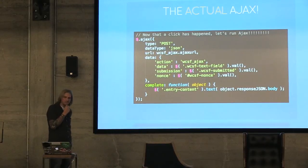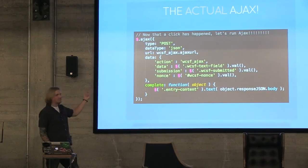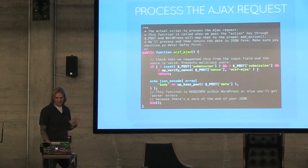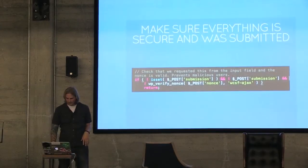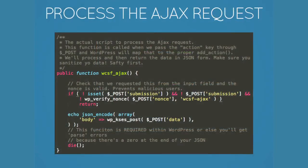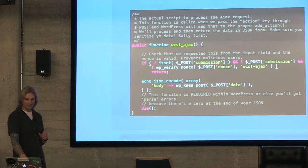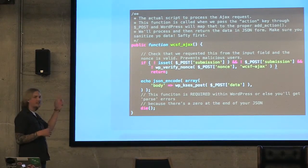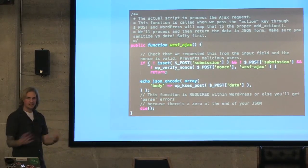So when our Ajax runs, we have our action at the top — just WCSF_Ajax — that actually links it over to a corresponding function. When action runs, it will link up the Ajax with our public function that I've written. This function will then take our data that we sent with Ajax, process it, and then send back the data and modify the server.